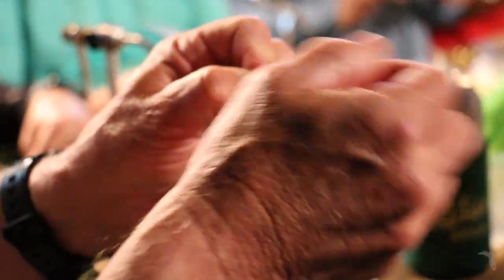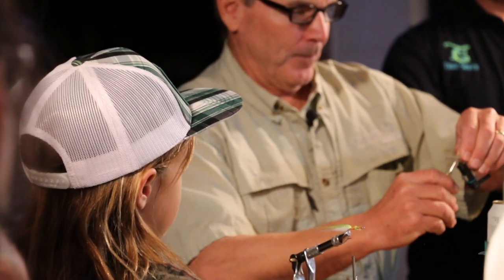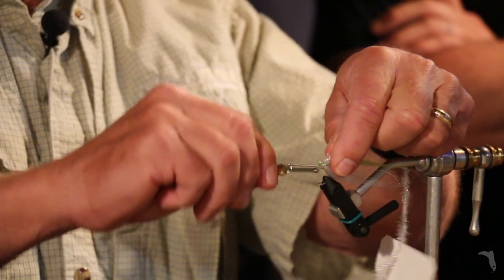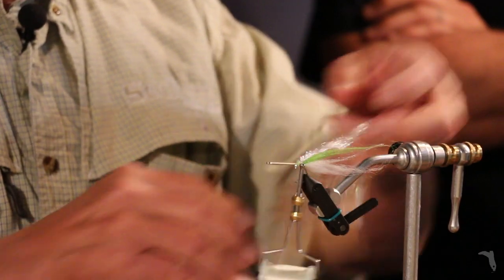It can be lime green or silver, kind of like maybe a mullet would be or whatever. Once you get that on, then you tie on your palm or chenille to the back.